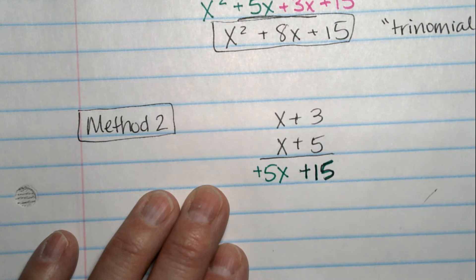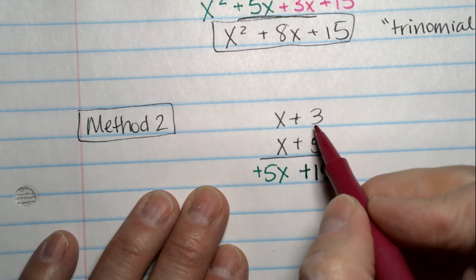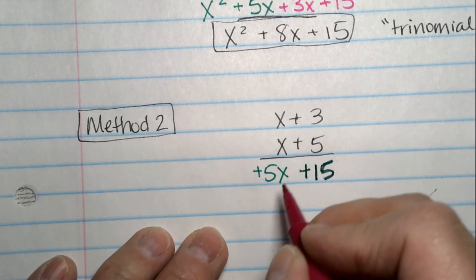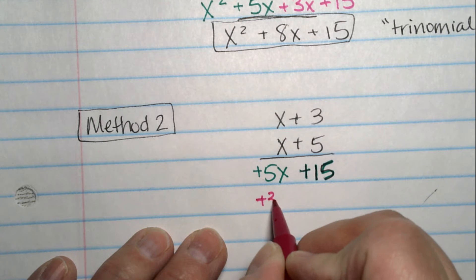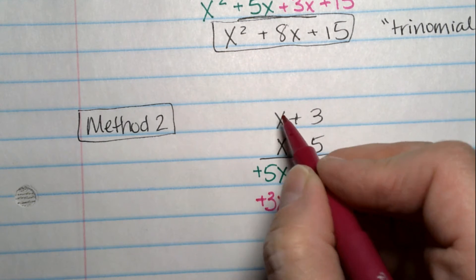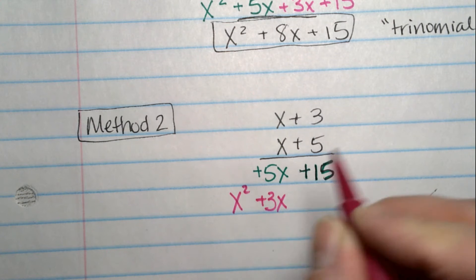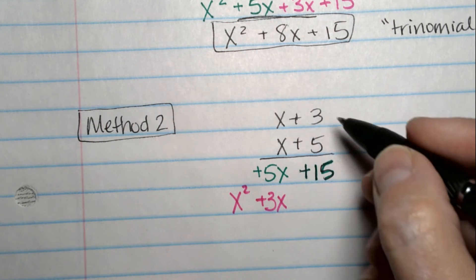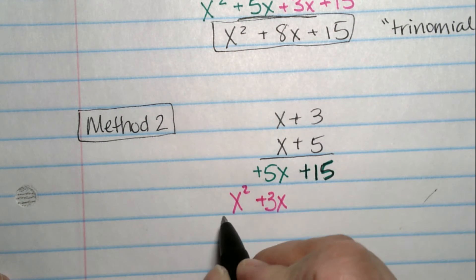Okay. I've run the 5 through now. I need to move and multiply this x times everything. x times 3 is a plus 3x. I don't put it here. I'll put it underneath the 5x because those are like terms. And then I have an x times an x which is an x squared.